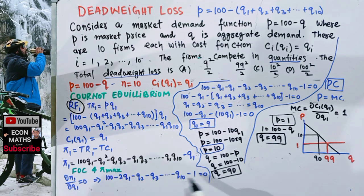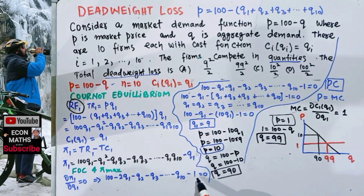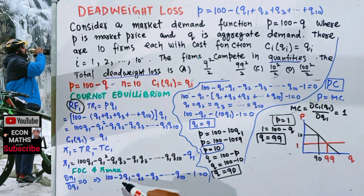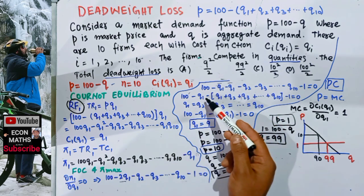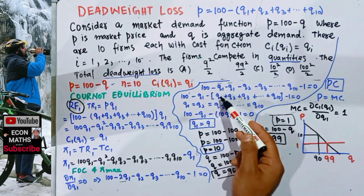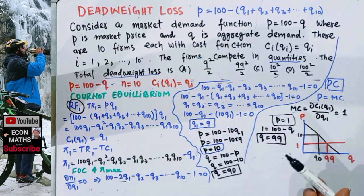Taking the partial derivative with respect to Q1 and setting it equal to zero: the derivative gives us 100 - 2Q1 - Q2 - Q3 - ... - Q10 - 1 = 0. This simplifies by combining the Q1 terms, so we get 100 - 2Q1 - (Q2 + Q3 + ... + Q10) - 1 = 0.